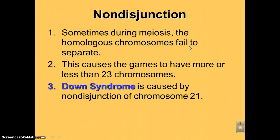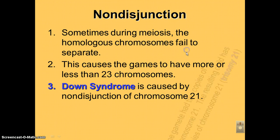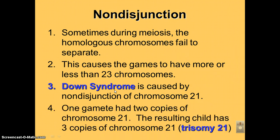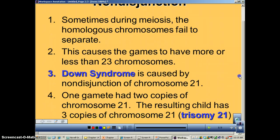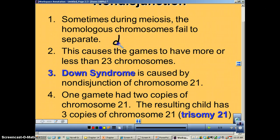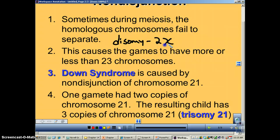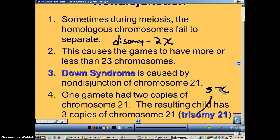Down syndrome is caused by non-disjunction of chromosome number 21. One gamete had two copies of chromosome 21, and the resulting child is going to have three copies — that's called trisomy. Trisomy means three. When everything works perfectly, you're going to be disomy, meaning you have two chromosomes of each. Trisomy means three chromosomes of a particular pair.